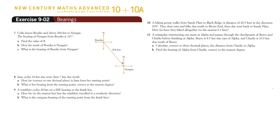Bearings, we've got 7, 8, 9, 10, 11. Exercise 902 from the New Century Maths Advanced Textbook.